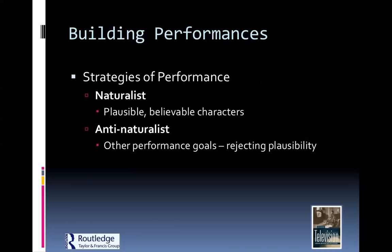We're back with part two of the chapter three lecture, continuing on talking about how actors, writers, and producers build characters. Now we'll get to a broader picture of performance in general — strategies of performance. The book talks about four particular strategies. The naturalist and the anti-naturalist are pretty much what they sound like. A naturalist is going to be as believable and as natural as they can be — a little bit more subdued, going for that kind of realistic performance.